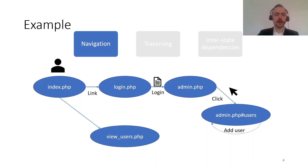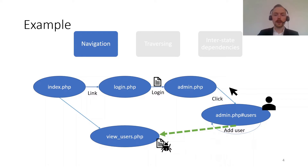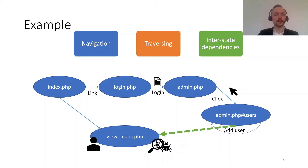Here's an example. The first thing we need to think about is how we navigate a web application. We can follow a link between two pages, submit a form with a username and password, or click on a button to generate a dynamic form where we can later add a user. We also need to think about how we traverse the application, because where we inject the user might be different from where we can see it reflected. So we might need to go back to the index page and continue crawling until we find the user that we inserted.